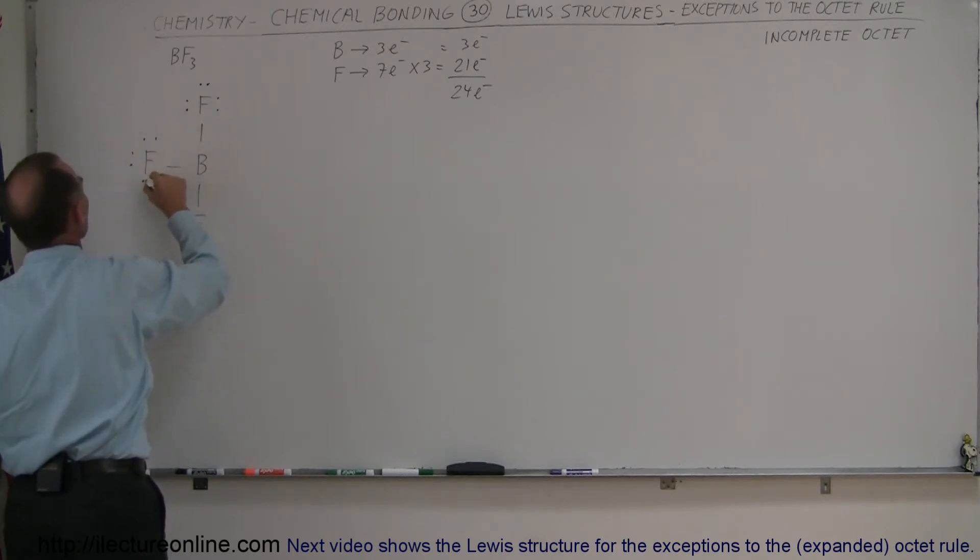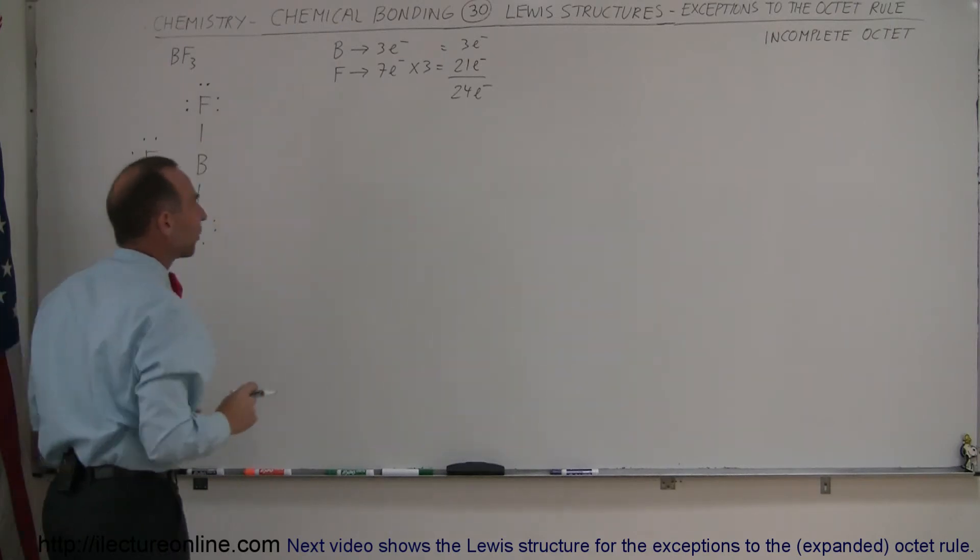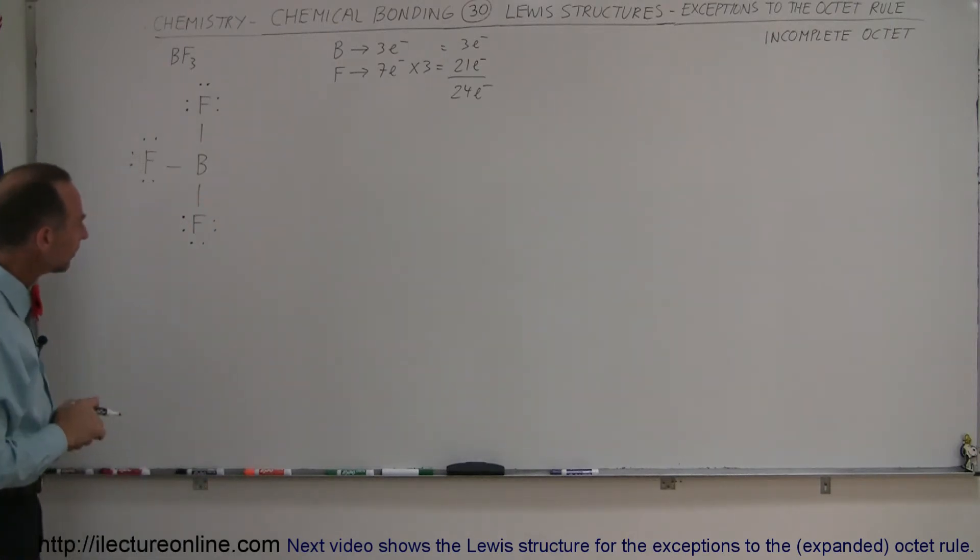Boron did what it could. It only had three valence electrons, so it made three bonds. There's a very stable molecule. But notice that boron only has six valence electrons available part of the time, not an octet, so the rule is violated.